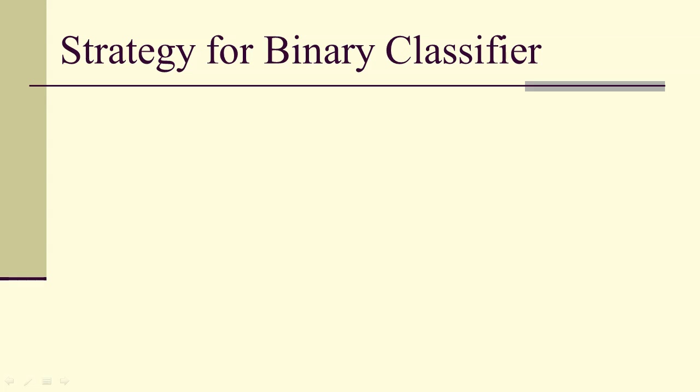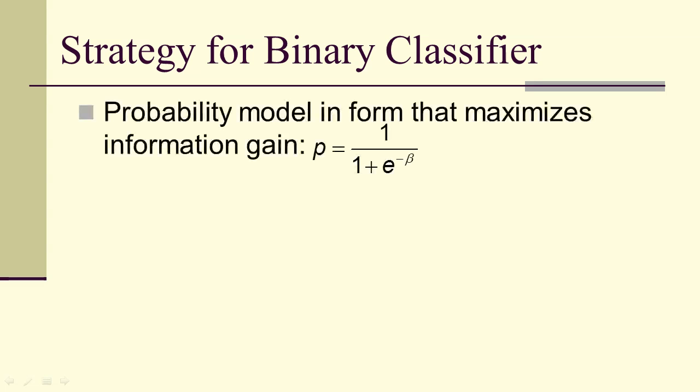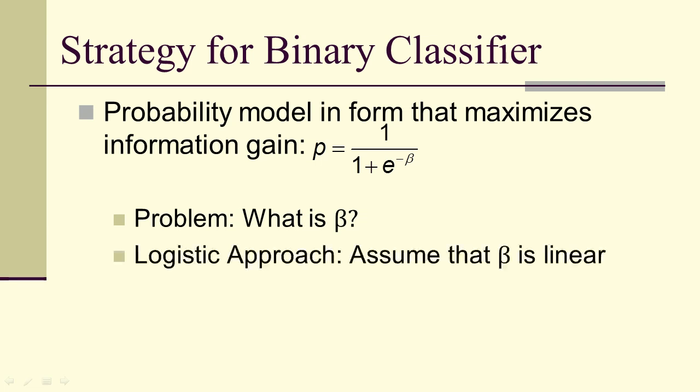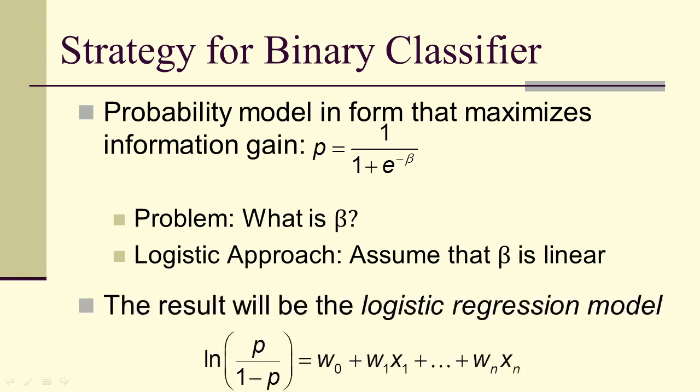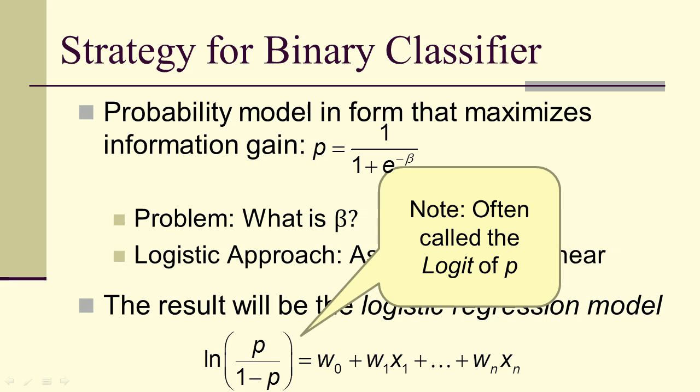Our goal then becomes finding the best weights given the data. So what's the strategy for applying this as a binary classifier? Well, we have a probability model that maximizes information gain. We don't know what beta is, so the logistic approach is to assume that it's linear. And that will give us the logistic regression model that we can then use to predict the probability P that y is in class 1, where 1 minus P is the probability that y is in class 0. Finally, often we call this log P over 1 minus P the logit of P.